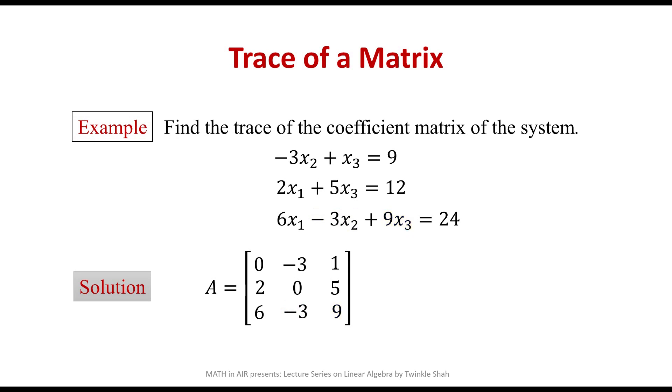That's the matrix A. Now let's find the trace of matrix A. Here the matrix A is a 3 by 3 square matrix. Again, go by the definition: the trace of a matrix is the sum of the elements on its main diagonal.